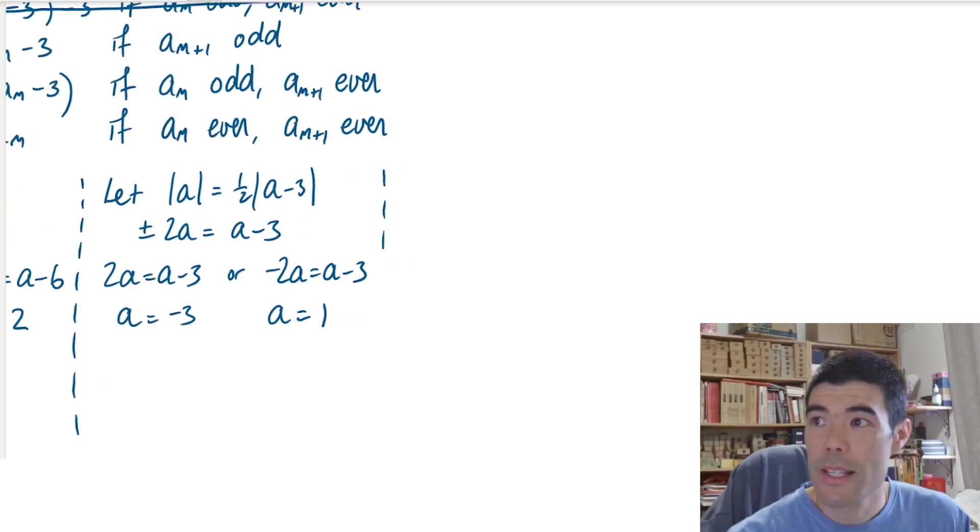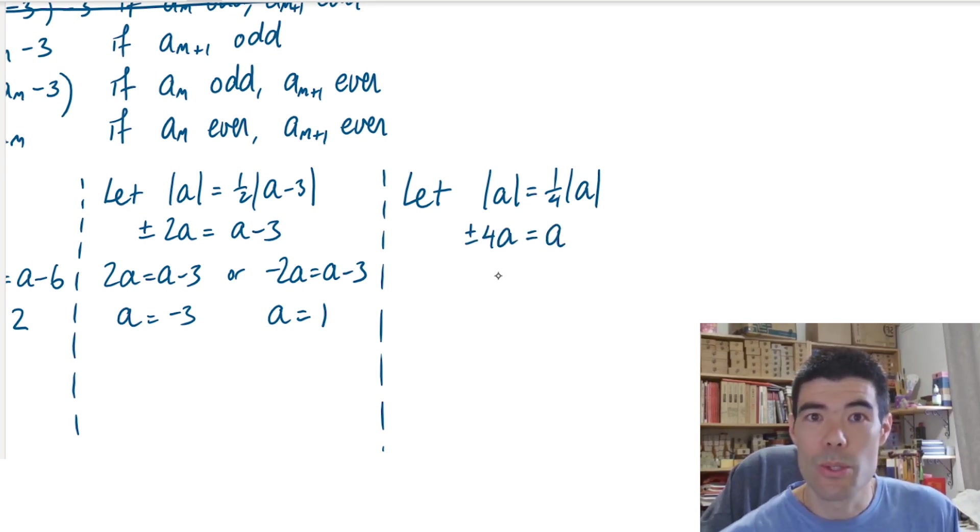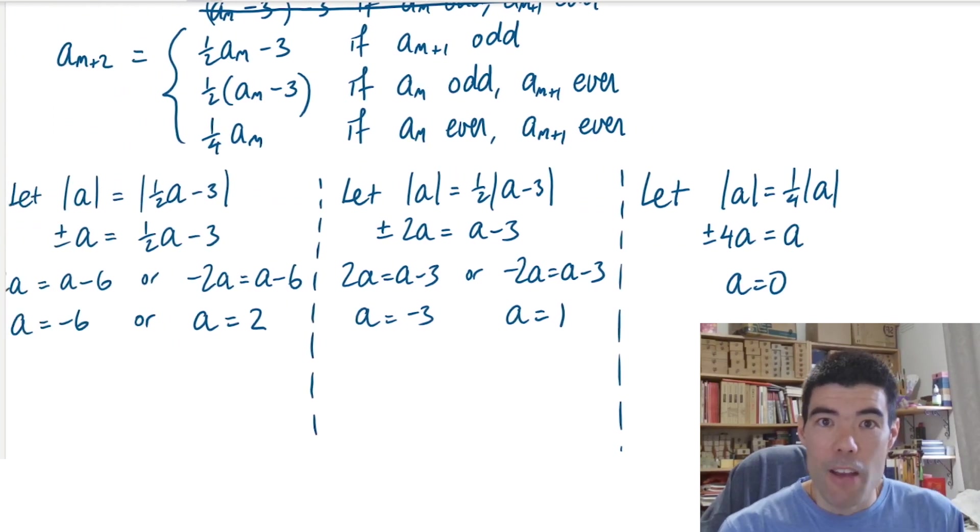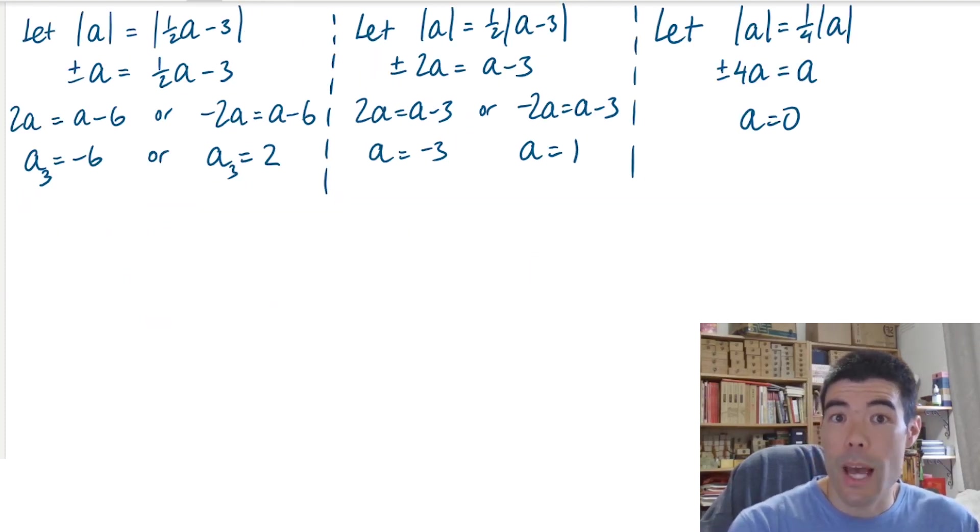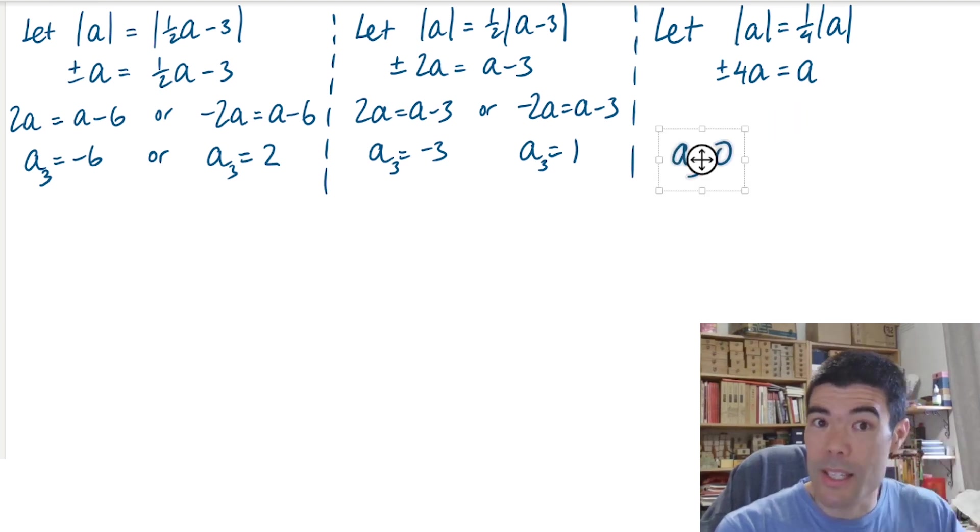Finally, in the third case, |a| should be a quarter of |a|. That's only going to have one solution, which is a = 0. All right. So we've got five possibilities here. And these are possible values of a_3 if |a_3| were equal to |a_5|. And now what we want to do is find for all possible sequences, find the possible values of a_1. So we need to work backwards a couple of terms.